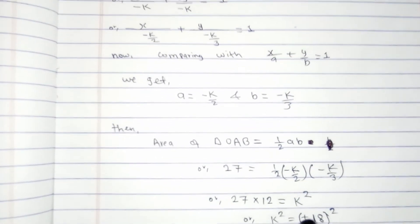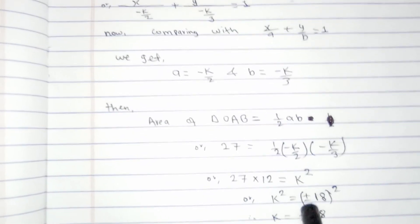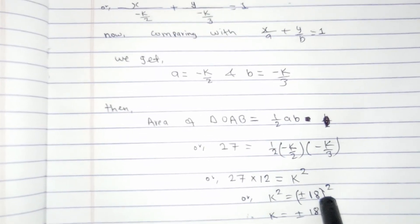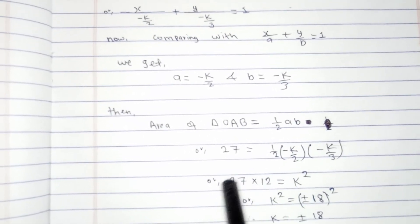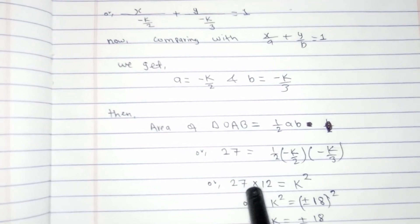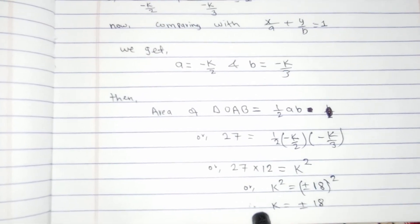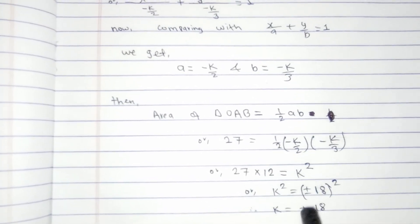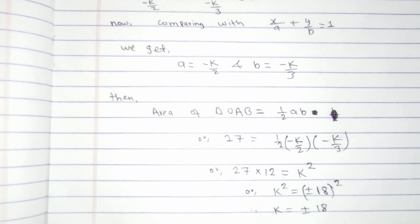324 can be written as 18², so k² = 18², which gives k = ±18. The square and square root cancel, therefore the value of k is ±18.